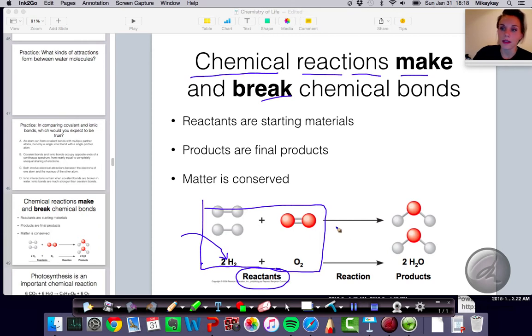Then, instead of having an equal sign, we use this arrow, sometimes called a yield arrow, and that indicates that a reaction is taking place. That arrow is always pointing to what is being made in your chemical reaction, what is being produced, and that's why we call those things the products. The reactants are your starting materials, your products are your final products, what you're ending up with in your chemical reaction.